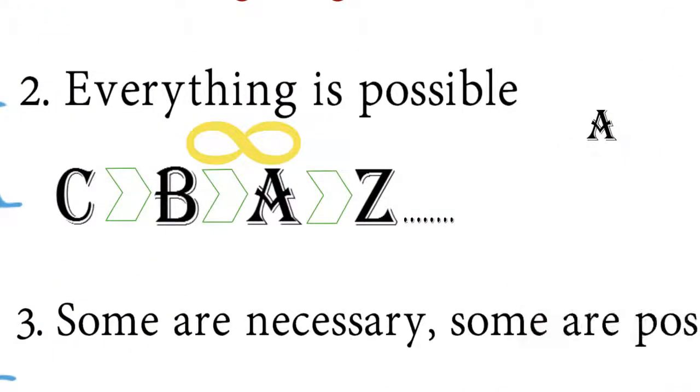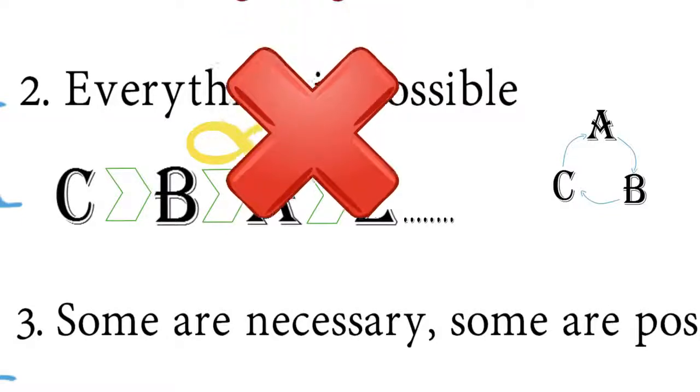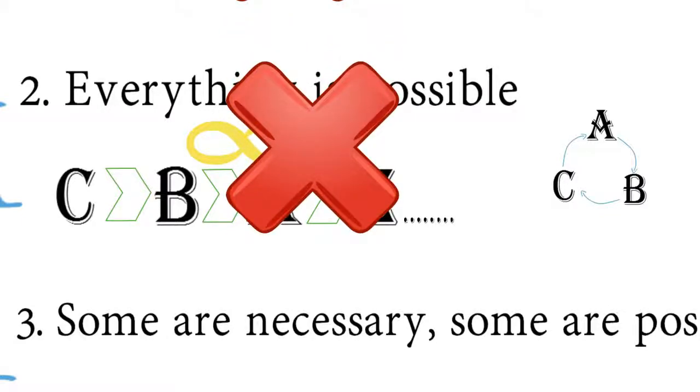What if A created B, and B created C, and C created A? Also known as a vicious circle, this is also impossible. So this crosses out everything that exists is possible.